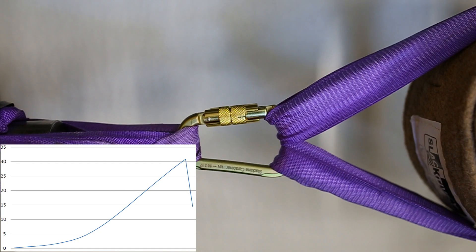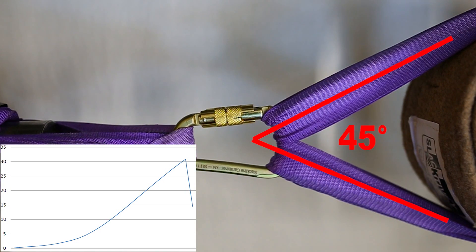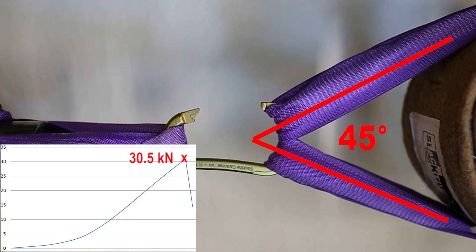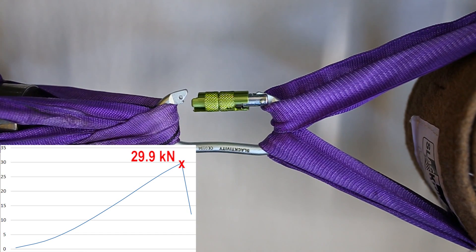So we went on putting the carabiners under treeload force. The angle between the two slings on one side was 45 degrees at the moment of destruction. Interestingly, the oval-shaped carabiner wasn't affected by treeloading.